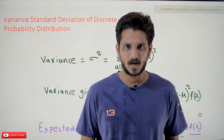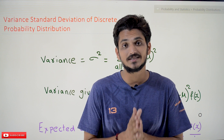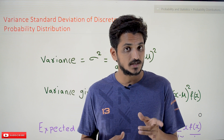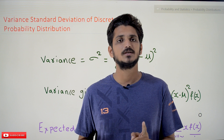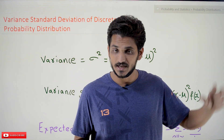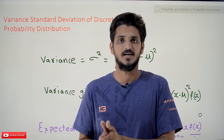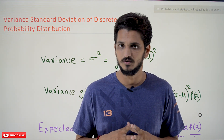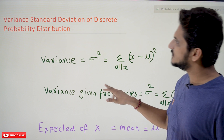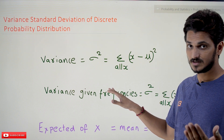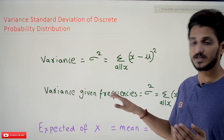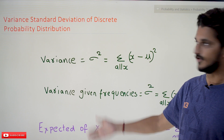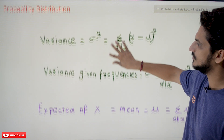Hi, welcome to Learning Monkey. I am Raghu. In this class we'll discuss about variance and standard deviation of a discrete probability distribution. In our last class we already discussed about expected value, and in our beginning classes we already discussed about variance and standard deviation — please watch those classes and come back here. The link for the playlist is provided in the description below. Today we will first refresh the equations for variance, standard deviation, and expected value, then go into how to find variance and standard deviation for a discrete probability distribution.